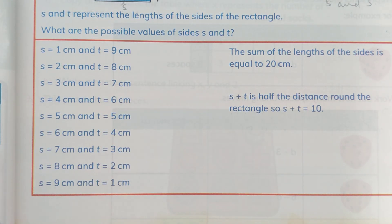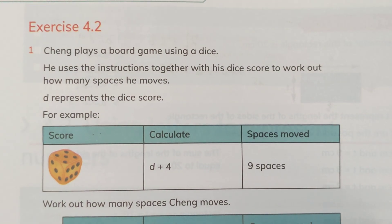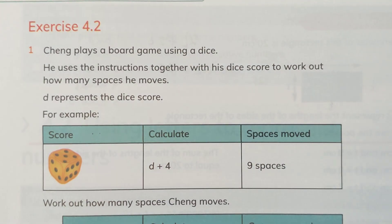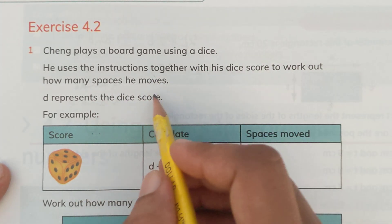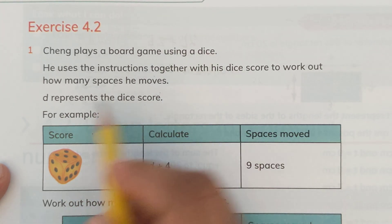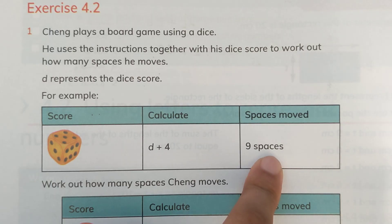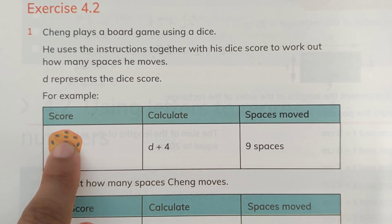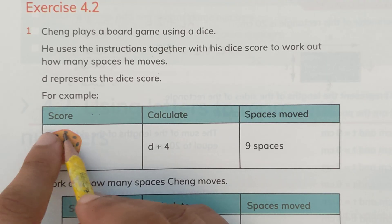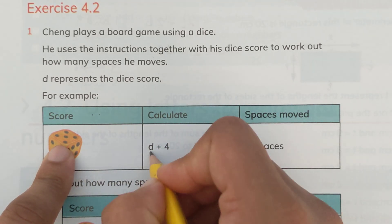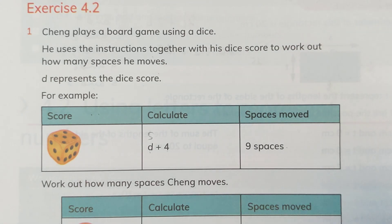Now let's move to Exercise 4.2. Question number one says: Shang plays a board game using a dice — the same kind used to play Ludo. He uses instructions together with his dice score to work out how many spaces he moves. D represents the dice score. For example, his score is given as five. We have to calculate d plus 4, so it would be 9 spaces, because we substitute d with the dice score of 5 and add 4.